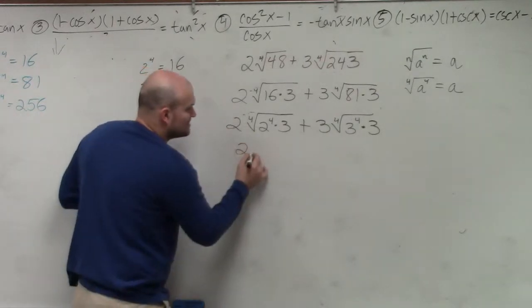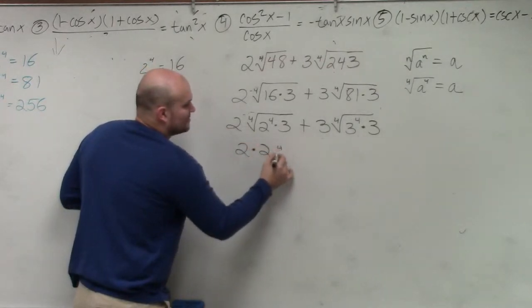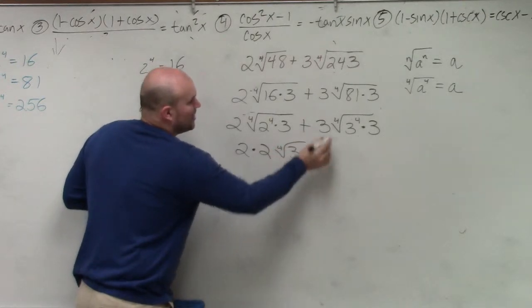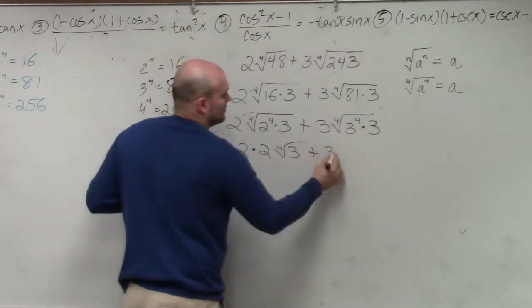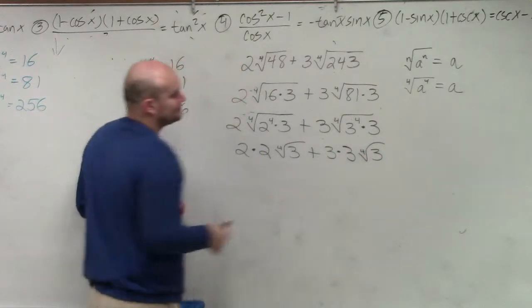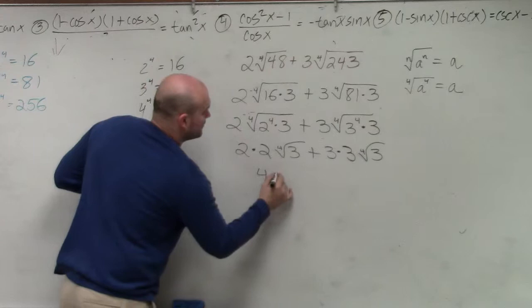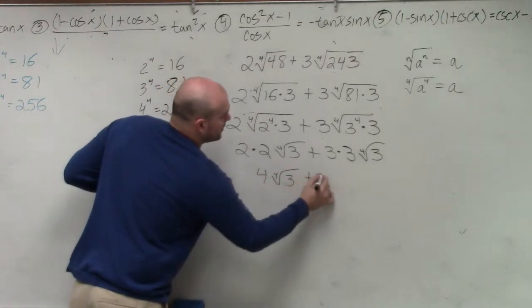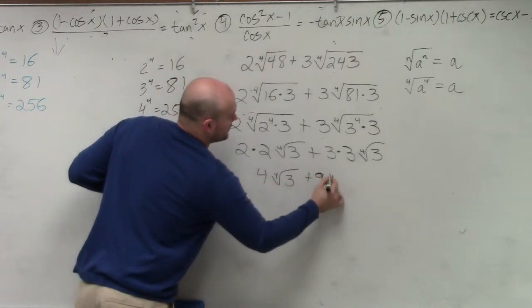fourth root of 2 to the fourth power is what? 2. Comes out of the radical. This 3 has to remain there. Plus fourth root of 3 to the fourth power is 3. So therefore,